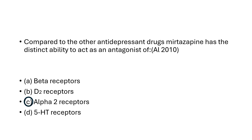Alpha-2 receptors. Alpha-2 receptors are auto-receptors present at the presynaptic membrane of the neuron, which inhibit the release of norepinephrine and 5-HT. But Mirtazapine blocks the presynaptic alpha-2 receptor, which causes an increase in the release of norepinephrine and 5-HT. So the answer is C — Alpha-2 receptors are blocked by Mirtazapine.